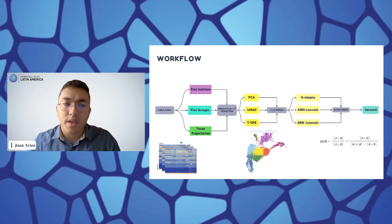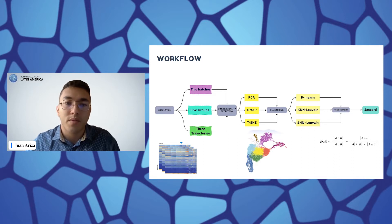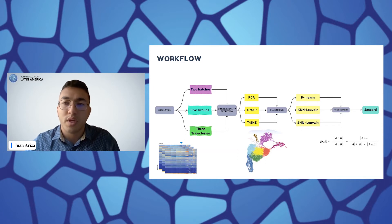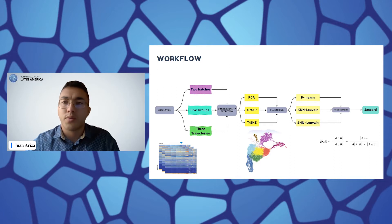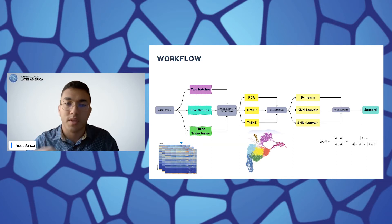We use three types of simulation. The first one simulates two batches — two original simulated batches. Then we simulate five groups, like simulating cell types. And then we simulate three trajectories: three cell types with a structure like a central node, and then two other cell types coming out of this central node.